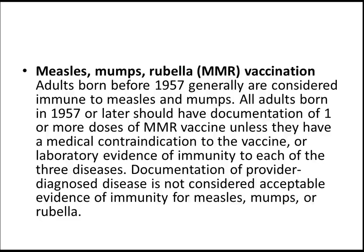Adults born before 1957 are generally considered immune to measles and mumps. All adults born in 1957 or later should have documentation of one or more doses of MMR vaccine, unless they have a medical contraindication to the vaccine or laboratory evidence of immunity to each of the three diseases: measles, mumps, and rubella. Documentation of provider-diagnosed disease is not considered acceptable evidence of immunity.